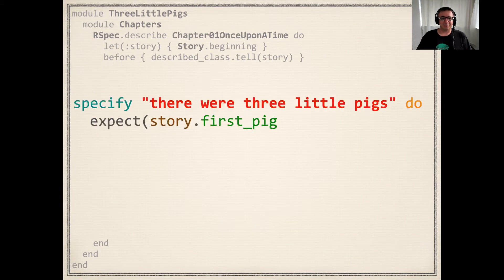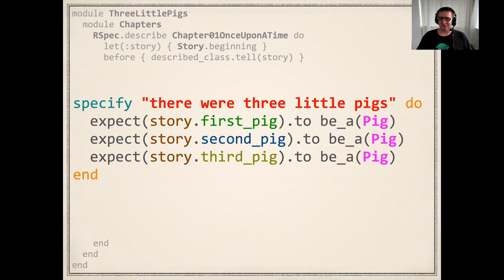Once upon a time, at the beginning of our story, there were three little pigs. The first little pig, the second little pig, and the third little pig.